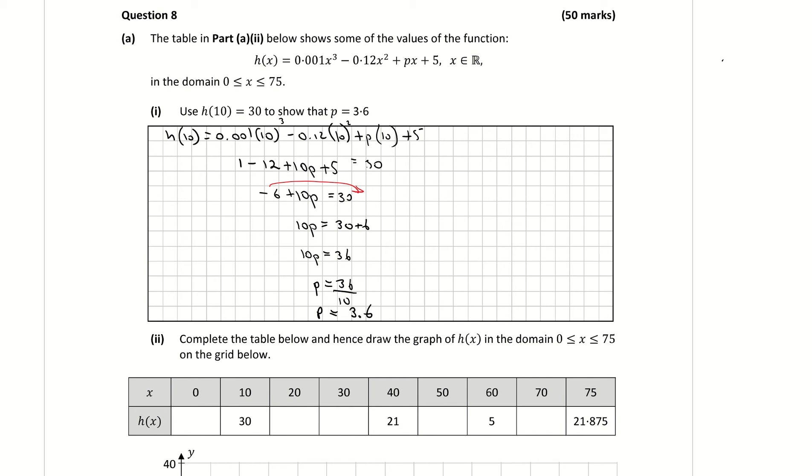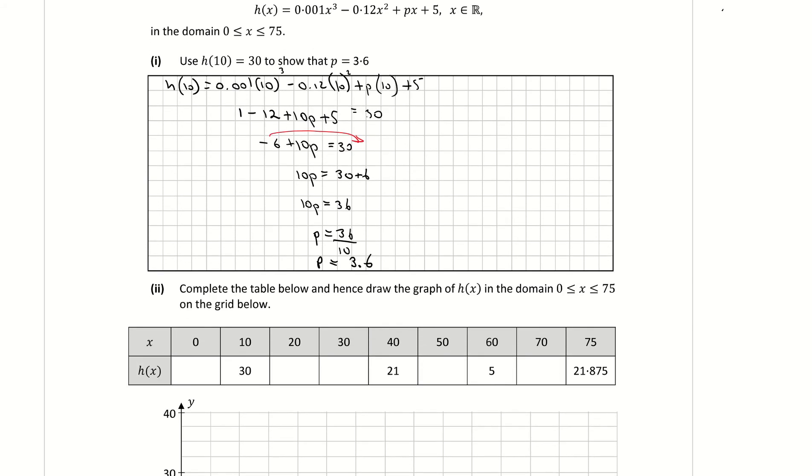Part 2: Complete the table below and hence draw the graph of h of x in the domain 0 to 75 on the grid below. So what they basically want us to do there is you're subbing in the x value on each one. They've subbed in 10 for x into my function and they've got out a result of 30. So when I subbed in 0, I get 5. When I subbed in 20, I got 37. When I subbed in 30, I got 32. 50, I got 10. 70, I got 12. So they're the couples, basically, my inputs and my outputs.